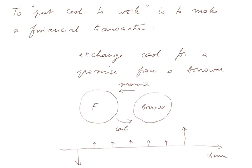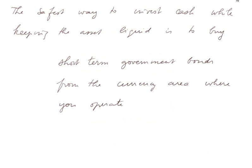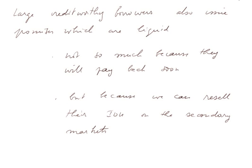Of course there are many other ways to invest cash, and in particular there are physical investments, but all these are more risky. The safest way to invest cash while keeping the assets liquid is to buy short-term government bonds from the currency area where we operate. Large creditworthy borrowers also issue promises which are liquid — not so much because they will pay back soon, but because you can resell their IOU on the secondary market without any difficulty, as they are creditworthy.